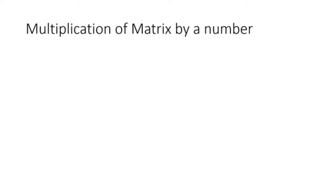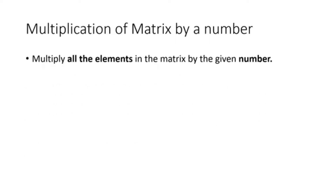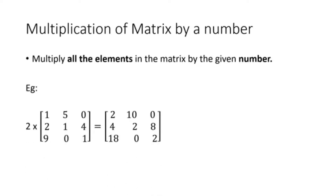The next part is multiplication of a matrix by a whole number or even an unknown term. The simple rule is to multiply all the elements in the matrix by the given number. For example, multiplying the matrix by two: two into one is two, two into two is four, two into one is two again — all terms in the matrix are multiplied by two to get the answer.